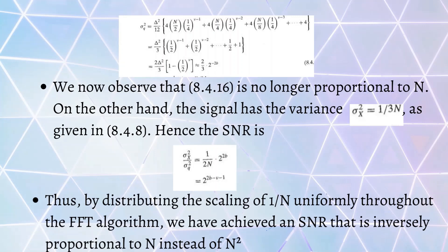We now observe that this variance is no longer proportional to N. On the other hand, the signal has variance 1/3N, as given previously. Hence, the SNR is 2^(2b-V-1).